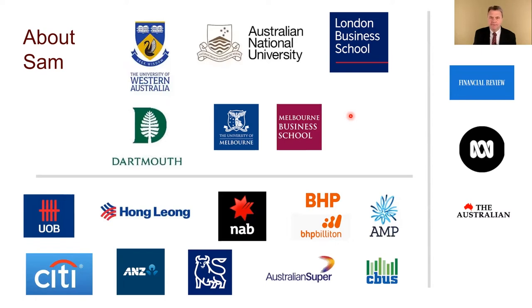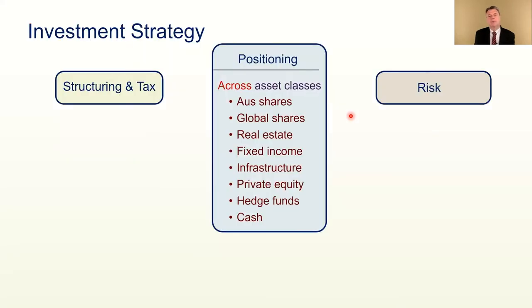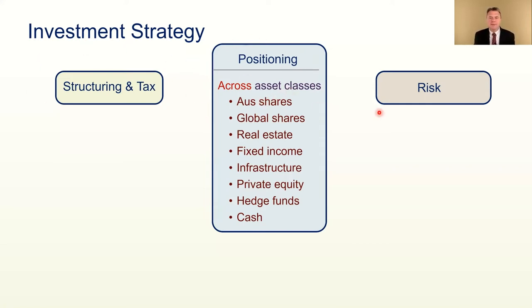Now let's go into investment strategy — we're just going to plunge right into this. Strategy is always about positioning, but investment strategy is about positioning, structuring, tax, and risk. We're going to see that this is the what, the where, and the how of investment strategy. Let's start off with the what: the positioning type. Positioning means choosing how much of your money to put into different asset classes.